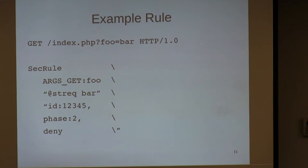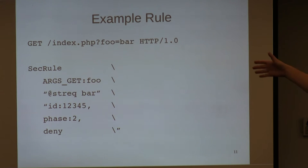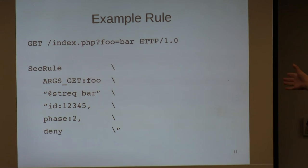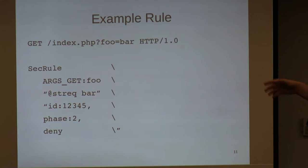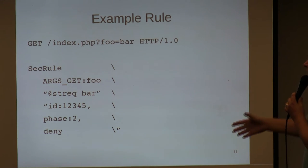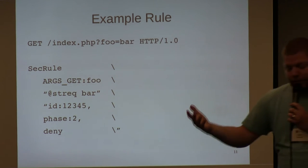Here's an example rule. We have a GET for index.php with a query param foo equals bar. Our matching rule would use SecRule as the directive, the ARGS_GET collection — all the GET request params — looking for the individual parameter called foo, matching with string equality against bar. Then we assign a rule ID, run it in a specific phase, and deny the transaction. Pretty simple stuff.